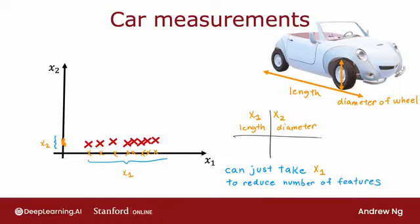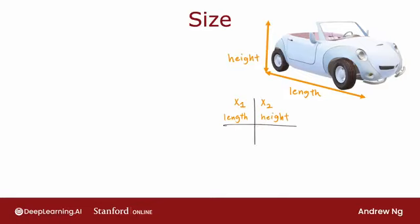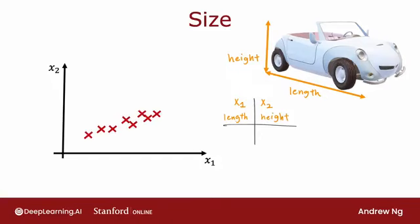In both the examples we saw, only one of the two features seemed to have a meaningful degree of variation. Here's a more complex example. Say the feature x1 is the length of the car. So that varies quite a bit. And the feature x2 here is the height of the car, which also varies quite a bit. Some cars are much taller than other cars. If you were to plot the data, you might get a data set that looks like this, where some cars are bigger, and they tend to be longer and taller. And some cars are a little bit smaller, they tend to be not as long and not as tall.